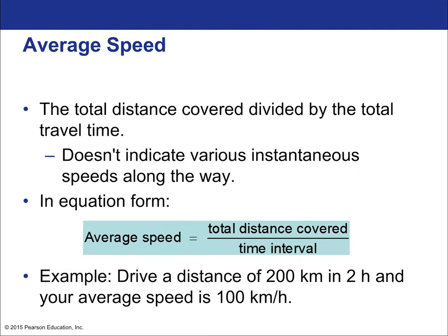Average speed is the total distance covered divided by the total travel time. It's different from instantaneous speed — it doesn't indicate various instantaneous speeds along the way. It is simply total distance divided by total time. When you're driving and look at your speedometer, that is not average speed. Average speed would be calculated using your odometer and a stopwatch — that tells you exactly how much distance has been covered and how long it took.